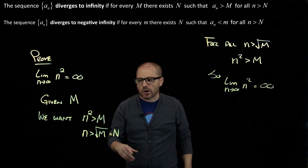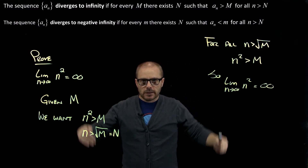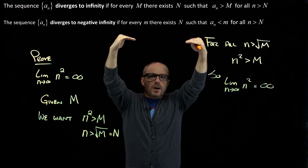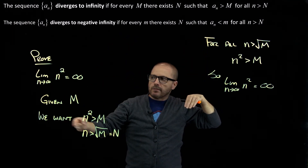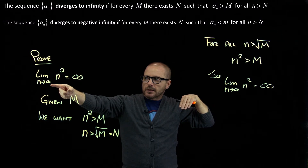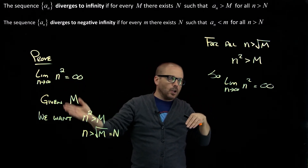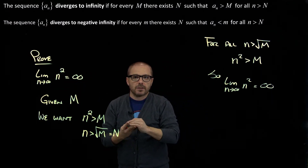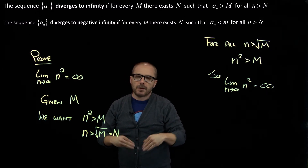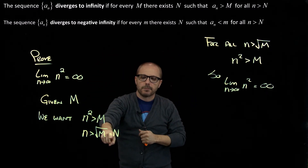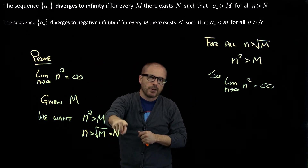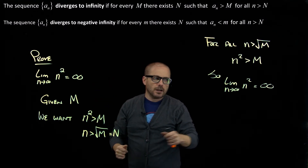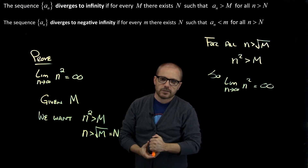What we've shown is how far out you have to go. If you pick a billion, all I have to do is go out to the square root of a billion in terms of terms, and all terms past that will be bigger than your billion. You can keep picking larger and larger numbers, but I already know how far out I need to go for any number. So we've shown that that limit is infinity.